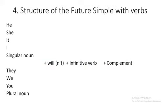Today we will talk about the structure of the future simple with verbs — مع الأفعال — the movement type, القسم الحركي. If we have he, she, it, I, or a singular noun, or they, we, you, or a plural noun, plus will or will not (won't) in the negative — بحالة النفي — plus an infinitive verb — فعل مجرد — plus complement.